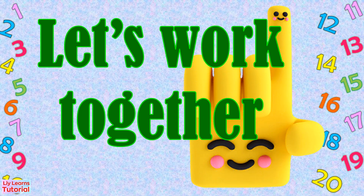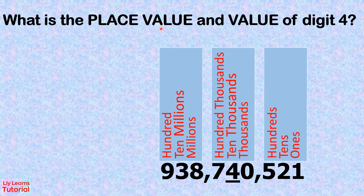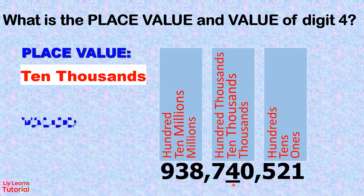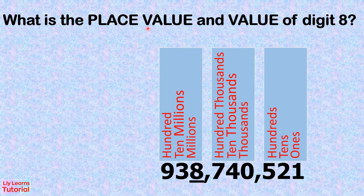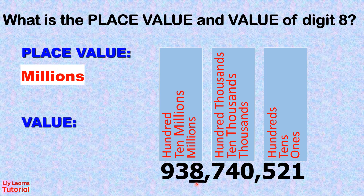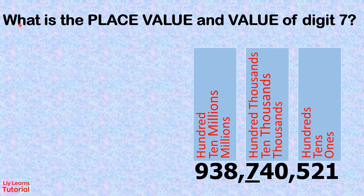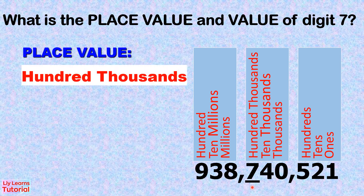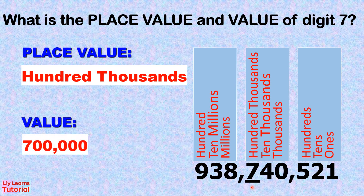Let's work together! What is the place value and value of digit 4? Place value: 10,000. Value: 40,000. What is the place value and value of digit 8? Place value: 10,000. Value: 8,000,000. What is the place value and value of digit 7? Place value: 100,000. Value: 700,000.